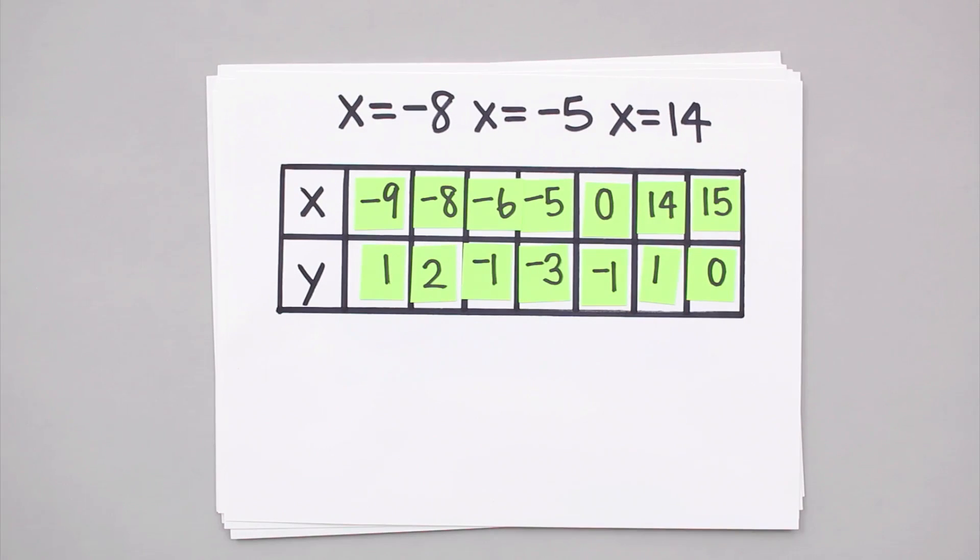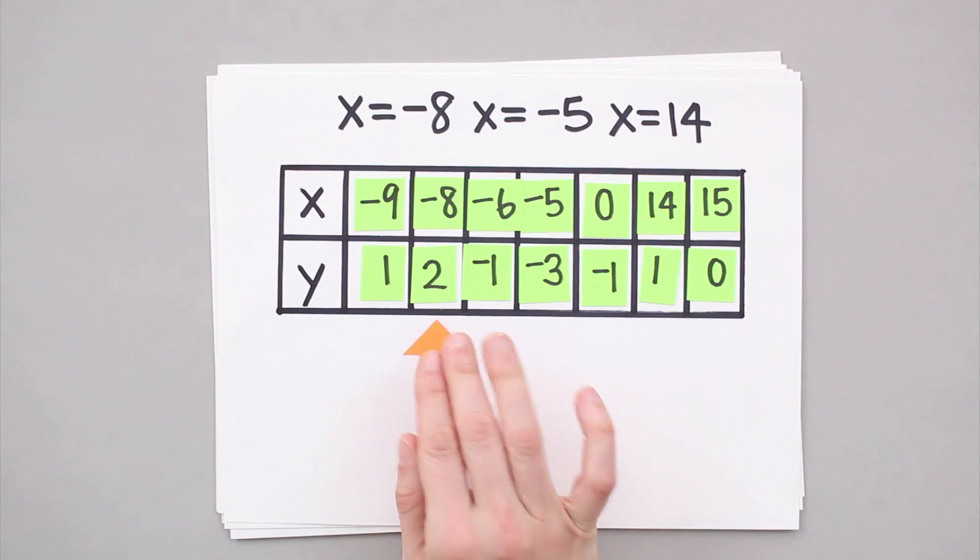So for example, if we were looking at this function's behavior on the interval negative 9 to 15, in other words the whole interval we have represented here, then we could say that there's a maximum at the point because we can see that the function goes down on either side of x equals negative 8.